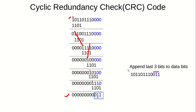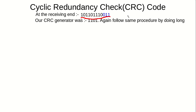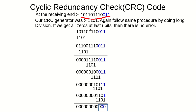This entire sequence — the original data plus the redundant bits — is sent over the communication channel. At the receiving end, we receive this and follow the same procedure again using the same generator polynomial, performing the same long division via bitwise XOR. If we get all zeros in the last three bits, it means there is no error.